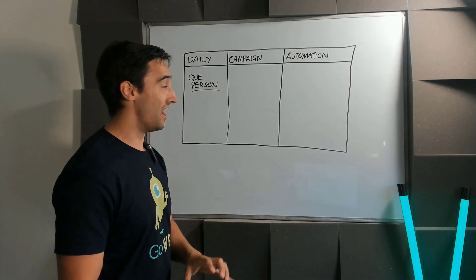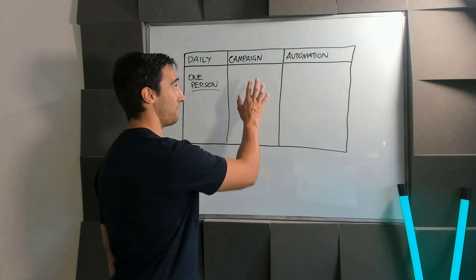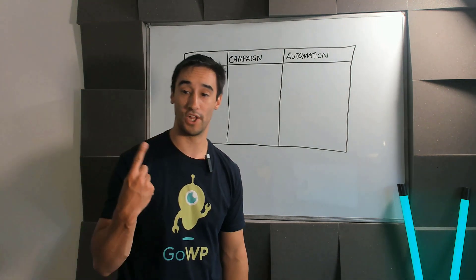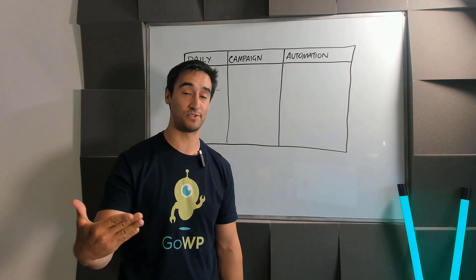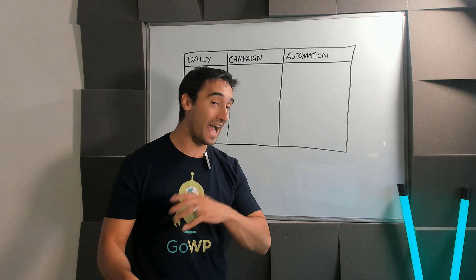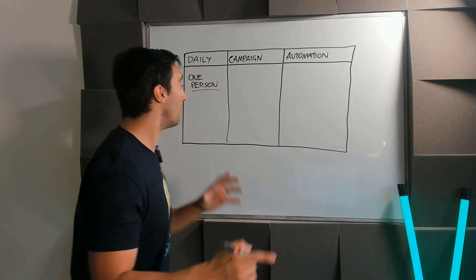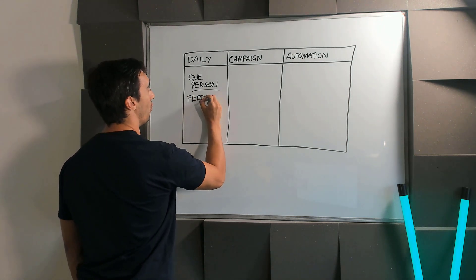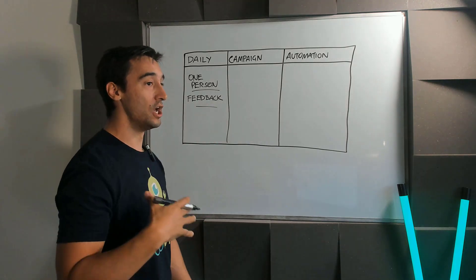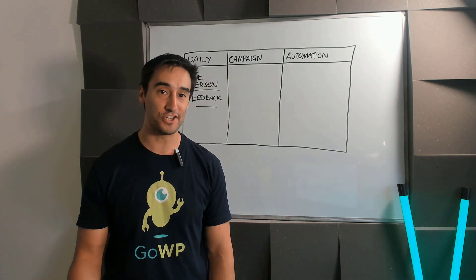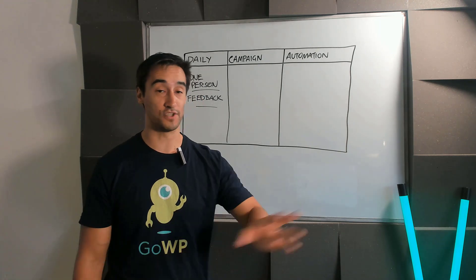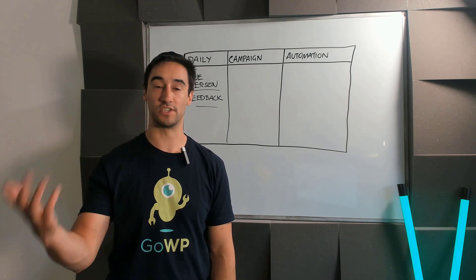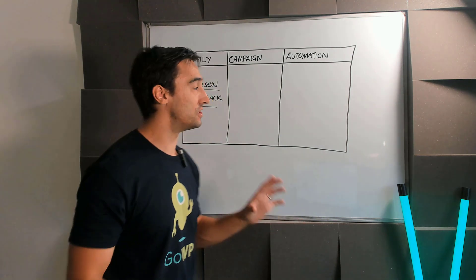Daily emails are actually the most important piece before campaigns and automation. I have a saying: if it's not worth doing a thousand times, it's not worth doing once. The main thing you want to look for is feedback — testing subject lines, copy, calls to action, and email formatting. I've stripped all the HTML out of our emails now, and they're pretty much as if I've just written an email in Outlook or Newton to someone.